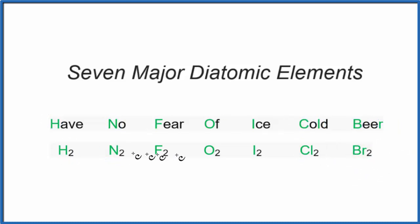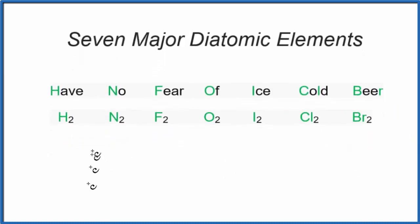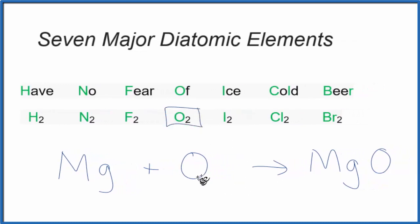What this means is when you have a chemical reaction, say, Mg plus oxygen gives us MgO. This isn't going to be just O, it's going to be O2. Magnesium plus oxygen yields magnesium oxide.